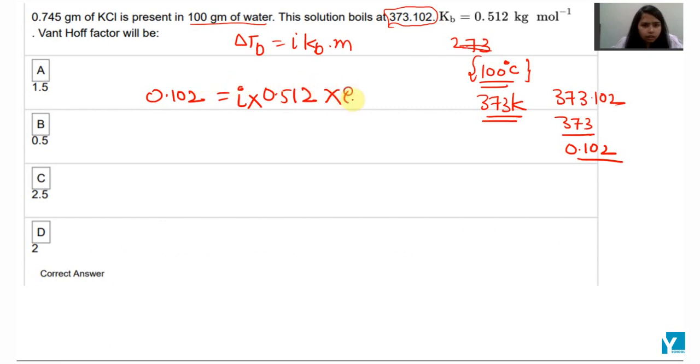Molality we can calculate as given weight divided by molar weight. For KCl the molar weight is 74.5 into mass of solvent in kgs.